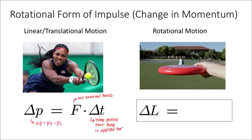Now for angular momentum, we're going to have a very similar expression. We can change the angular momentum of an object delta L by applying a net external torque over a period of time.